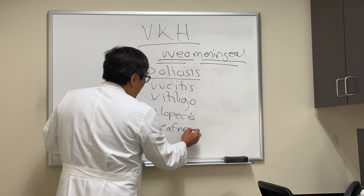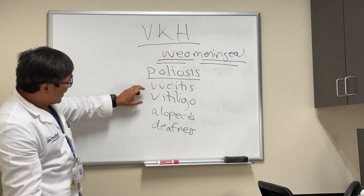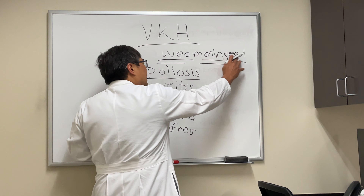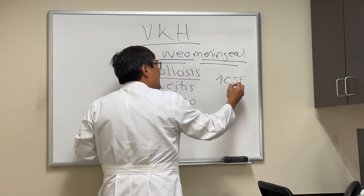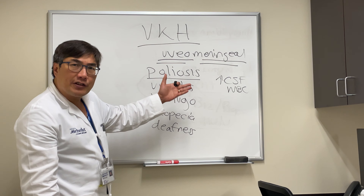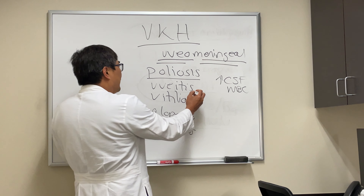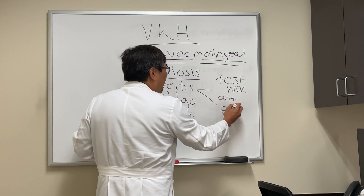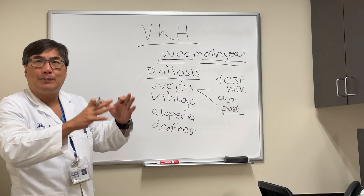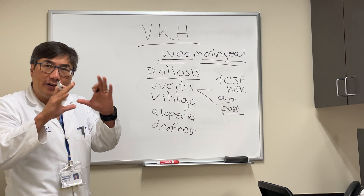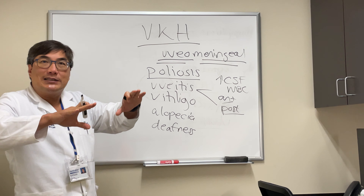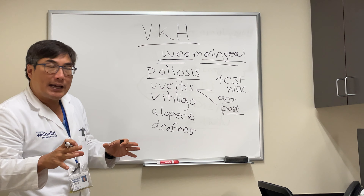The constellation of poliosis, uveitis, vitiligo, alopecia, and deafness — in conjunction with meningeal symptoms such as increased CSF pleocytosis (elevated white count) or other meningeal signs — that's VKH. The uveitis can be anterior or posterior. When it's in the posterior segment it can cause choroidal findings, retinal vasculitis, optic disc edema, and one of the characteristic features of VKH: serous retinal detachments, where the pigment epithelium is leaking and you get multifocal serous detachments.